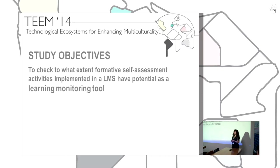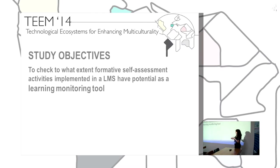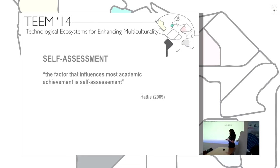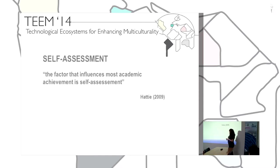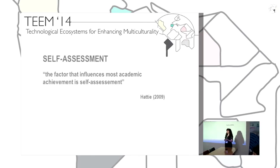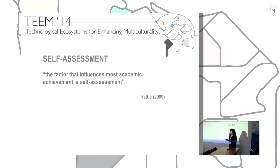The objective is to check if formative self-assessment activities implemented using an LMS — in this case, the Moodle platform — can be used as a learning monitoring tool. Self-assessment is said to be the main factor that influences academic achievement. It is also important for learner autonomy. To be an autonomous learner, you must know how to assess what you learn. You cannot be autonomous if you can't do this.